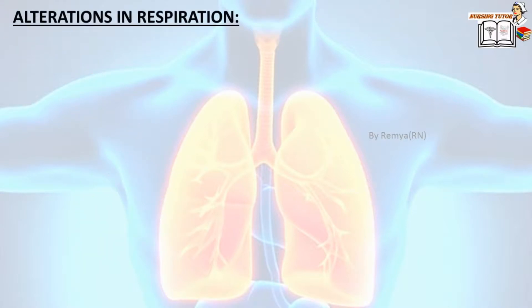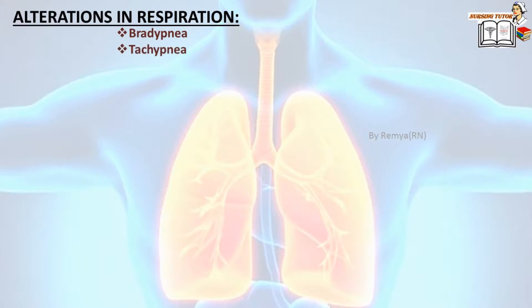Alterations in respiration: Bradypnea — respiratory rate below normal limits, i.e., below 10 breaths per minute, is called bradypnea. Tachypnea — respiration above normal limits, i.e., 30 breaths per minute, is called tachypnea. Apnea — absence of respiration.